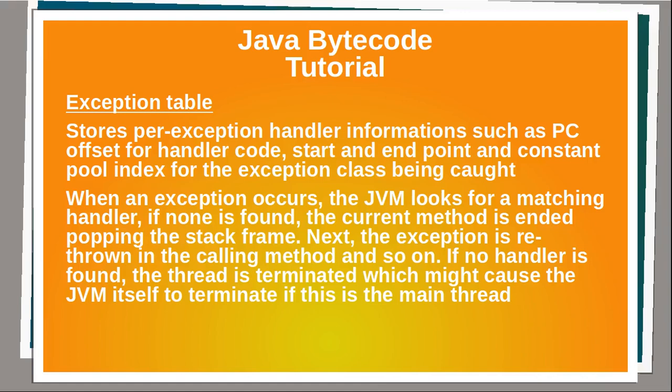Just before we start playing around with code in the next lesson: the exception table stores per-exception handler information, such as the program counter offset for handler code, start and ending point, and constant pool index for the exception class being called. When an exception occurs, the JVM looks for a matching handler. If none is found, the current method is ended, popping the stack frame. The exception is rethrown in the calling method, and so on. If no handler is found, the thread is terminated, which might cause the JVM itself to terminate if this is the main thread.